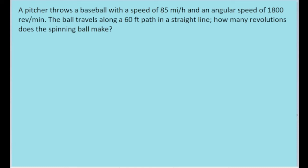Hello. In this problem, we are given the speed of a moving baseball after it's been thrown. We're given its angular speed, so the speed of its spin. And we're also given its travel distance. So we're told that when we throw the ball, it travels 60 feet in a straight line.